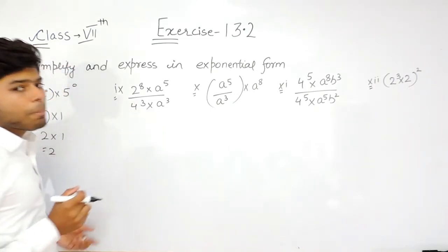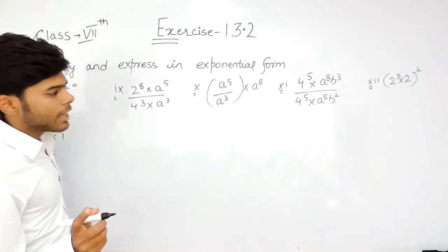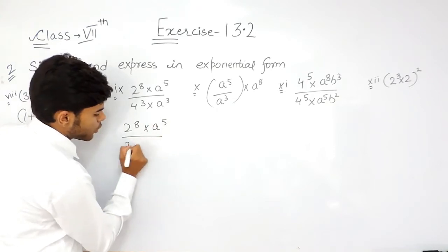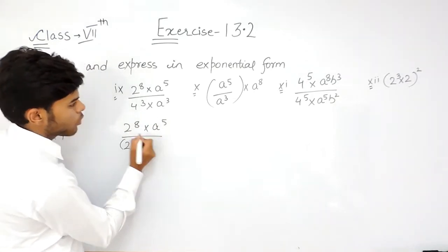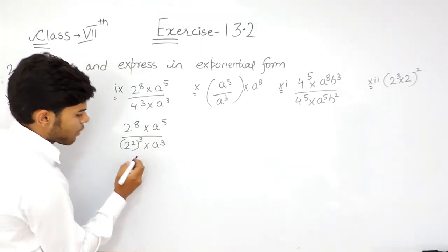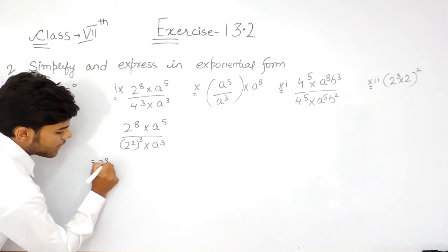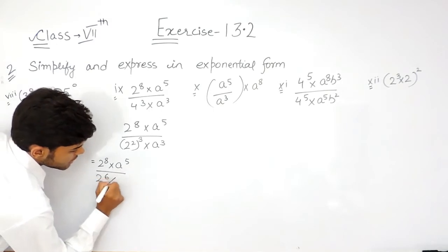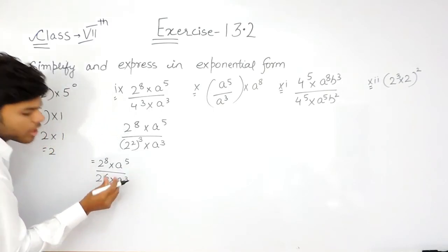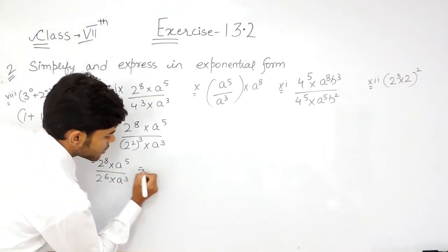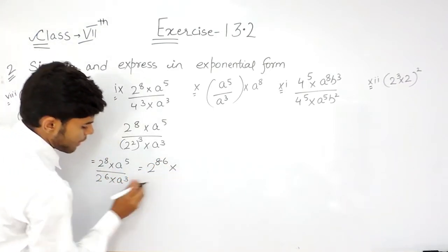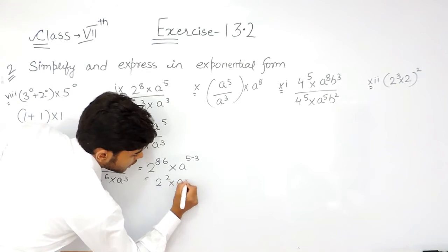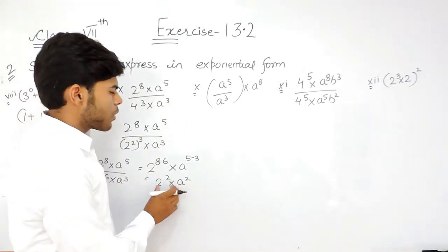This 4 is not in its prime factorized form, so first we will convert it — that will be 2 to the power 8 into a to the power 5 upon 2 squared, which is 4, whole cube into a cube. That gives 2 to the power 8 multiplied with a to the power 5 upon 2 to the power 6 into a cube. The powers from the denominator go to the numerator with a sign change, giving 2 to the power 8 minus 6 multiplied with a to the power 5 minus 3, which equals 2 squared multiplied with a squared.